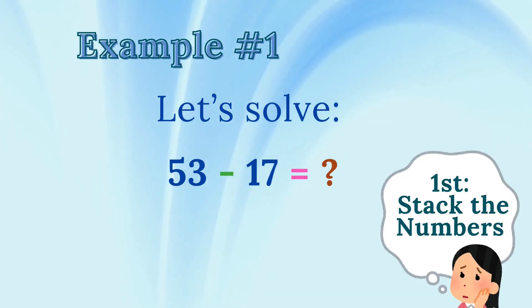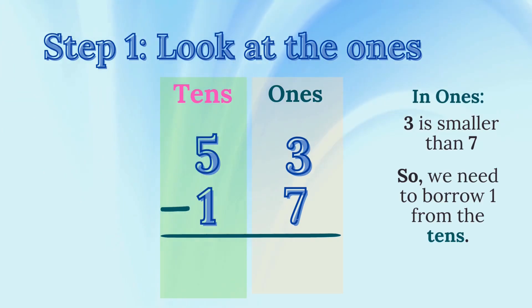Example number 1. Let's solve 53 minus 17. Step 1. Look at the ones place. In 53, we have three ones. In 17, we have seven ones. Can we subtract 7 from 3? No, 3 is smaller than 7, so we need to borrow from the tens place.